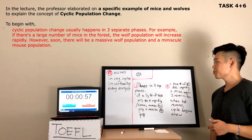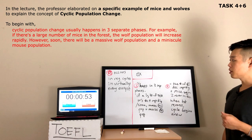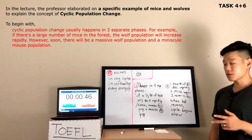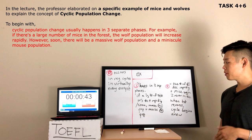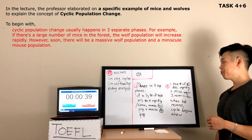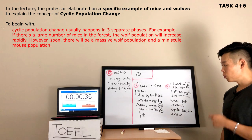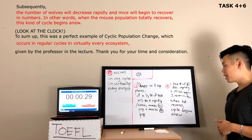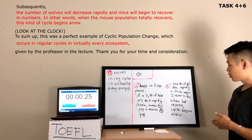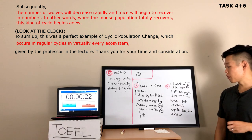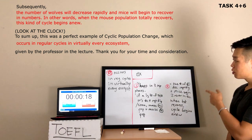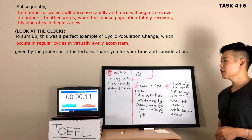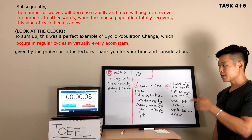In the lecture, the professor elaborated on a specific example of mice and wolves to explain the concept of cyclic population change. To begin with, cyclic population change usually happens in three separate phases. For example, if there is a large number of mice in the forest, the wolf's population will increase rapidly. However, soon there will be a massive wolf population and a minuscule mouse population. Subsequently, the number of wolves will decrease rapidly and mice will begin to recover in numbers. In other words, when the mouse population totally recovers, this kind of cycle begins anew. To sum up, this was a perfect example of cyclic population change, which occurs in regular cycles in virtually every ecosystem, given by the professor in the lecture. Thank you for your time and consideration.